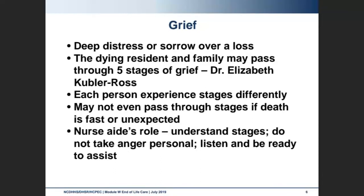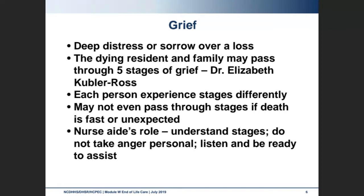Grief is the deep distress or sorrow over a loss. This is a dynamic and personal process. The dying resident and family may pass through the five stages of grief, according to Dr. Elizabeth Kübler-Ross. The five stages of grief are denial, anger, bargaining, depression, and acceptance. Each person may experience the stages at a different rate and time, and some may stay in one stage until death. Others may bounce back and forth between the stages. It may not even be possible for a person to pass through the stages if death is fast or unexpected. The nurse aide's role is to understand these stages and not take anger personally, be able to listen, and be ready to assist. Keep in mind that these are stages of grief that your resident or patient is going to be going through, family members are going to be going through, and you may be going through as well.